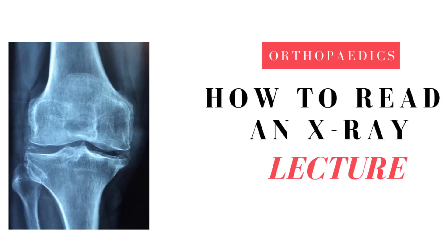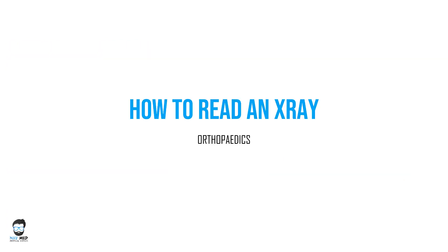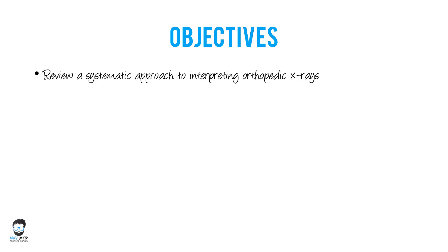Hello everyone, welcome to another lecture. Today we're discussing an important topic: how to read an x-ray in orthopedics. Let's first look at the objectives — what we are trying to accomplish here. We're going to review a systematic approach to interpret orthopedic x-rays. If you go systematically and know how to go about it, it's easier to understand and explain. We're also going to review the language of fracture description.